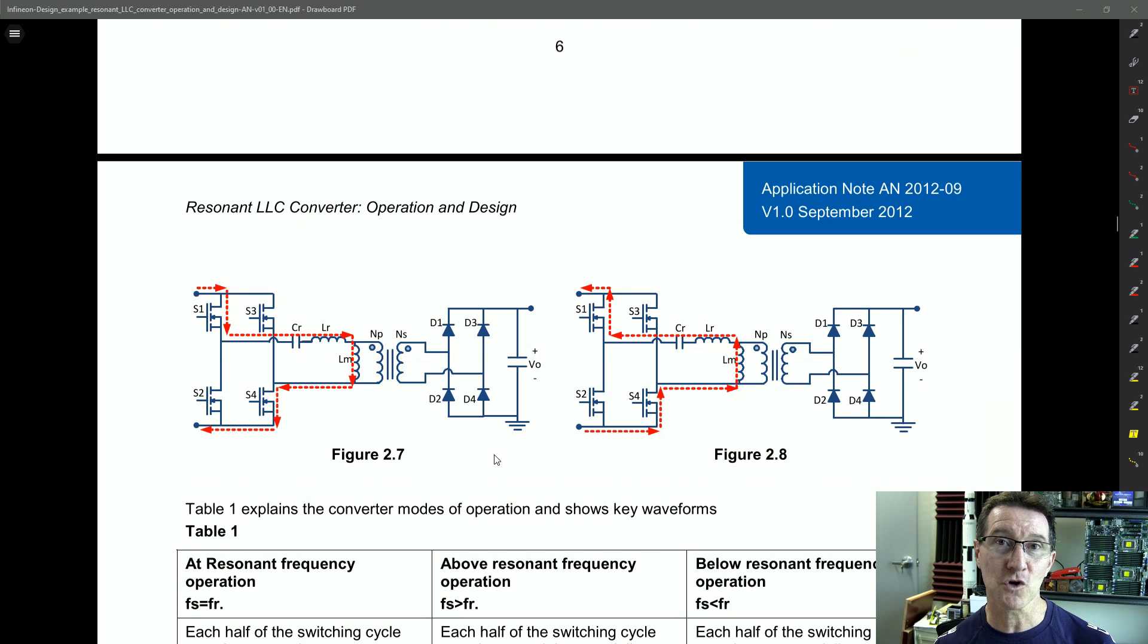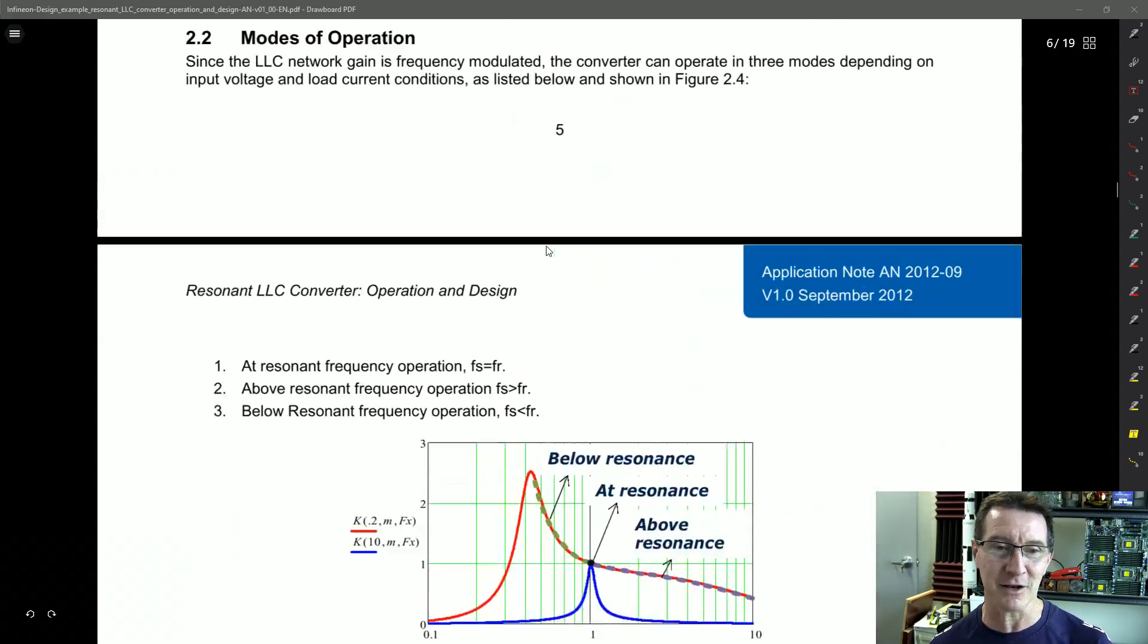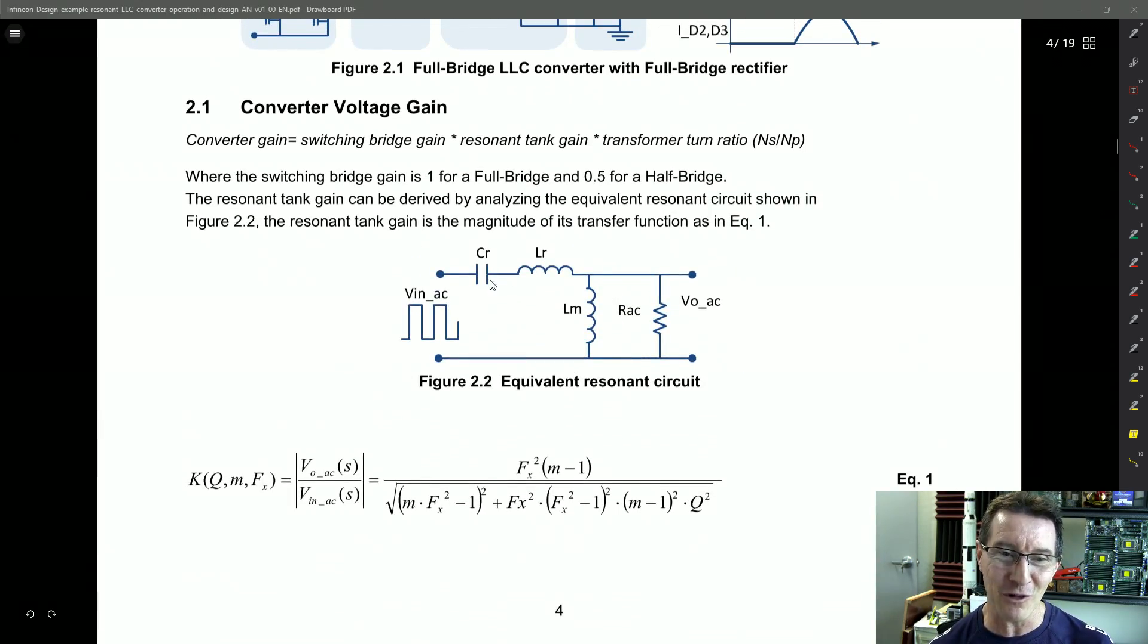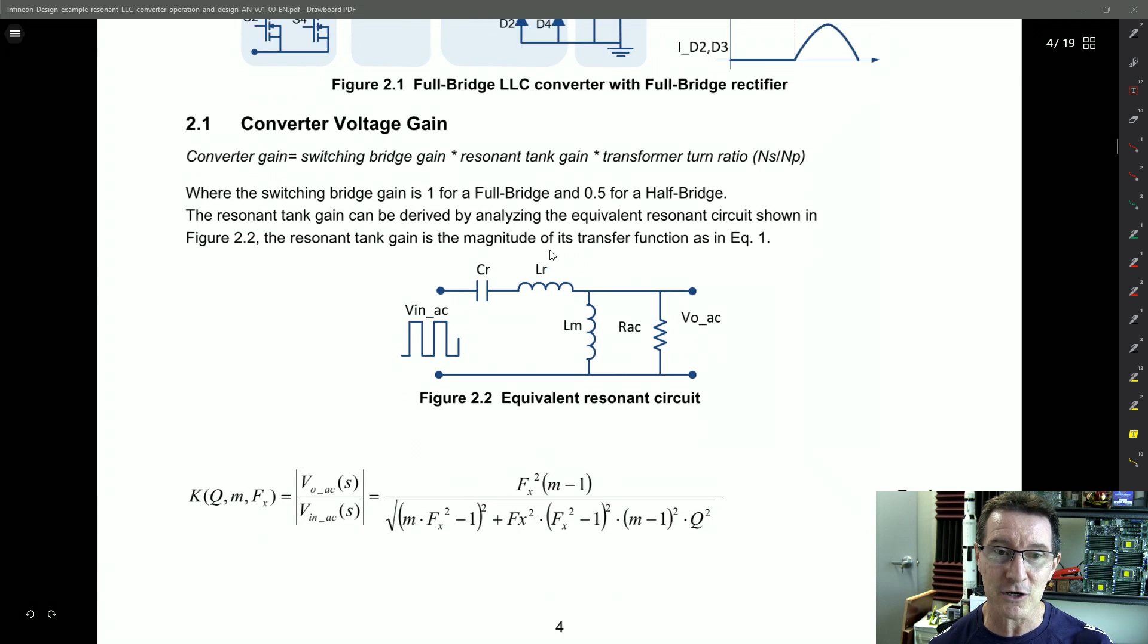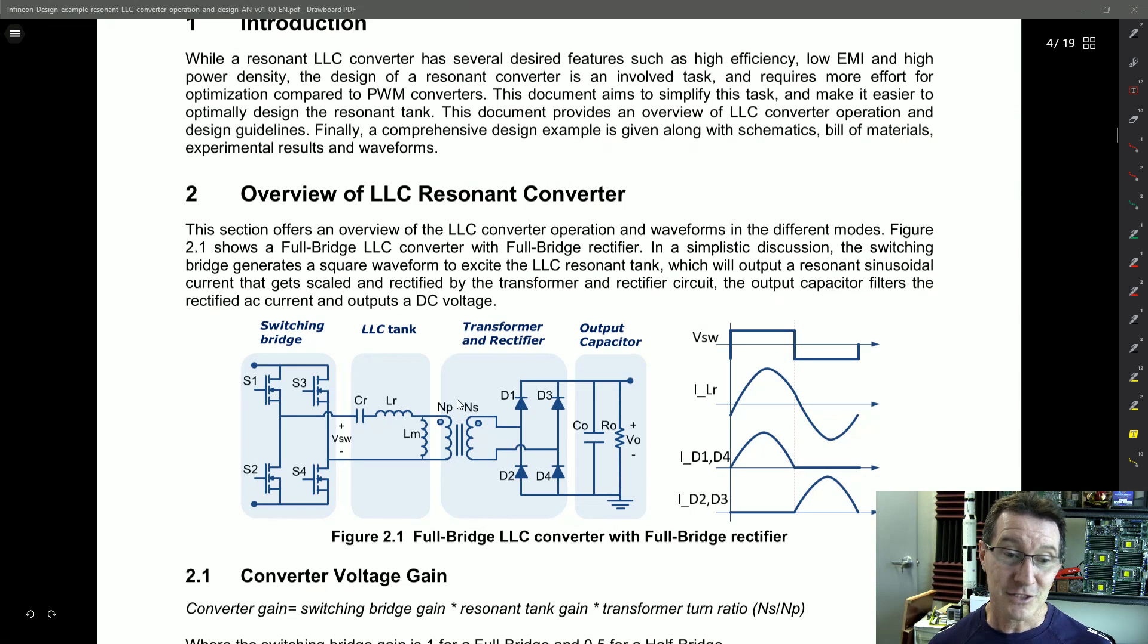And the other thing with resonant mode controllers, if you haven't already gathered, is that they're more expensive and more difficult to actually design and tweak and get right. So, hence, they're only used in really top shelf power supplies like this one. And, like you can just have a look at all of the analysis required, the equivalent resonant circuit. And this is just a first harmonic analysis, I believe, of it. But that's pretty much all you need to do. But you can go further down the rabbit hole, as I said.